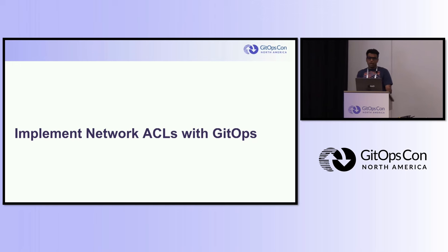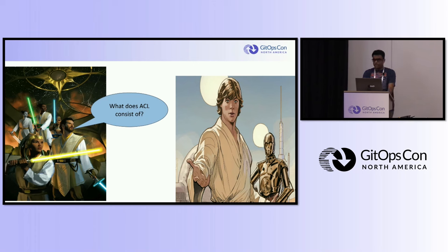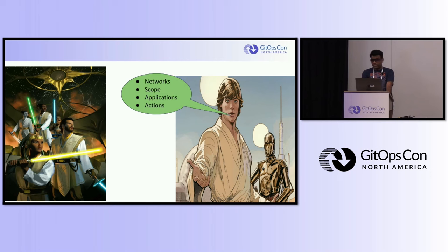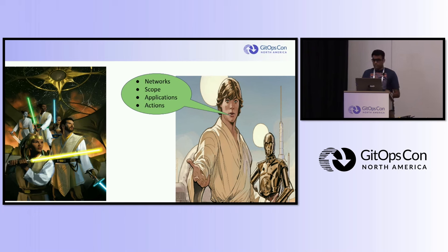Before going into implementation, let's recap what defines an ACL and its components. First are networks — the source and destination IP ranges to which ACL rules apply. Second is scope, which defines the boundaries of its application such as tenants and zones. Third are applications, which are governed by their ports and protocols. And last are actions — what needs to be done when a rule is matched: drop, accept, reject, count, or log.